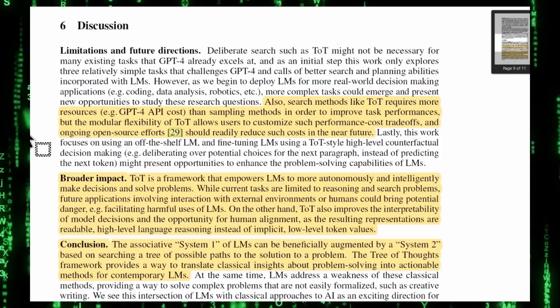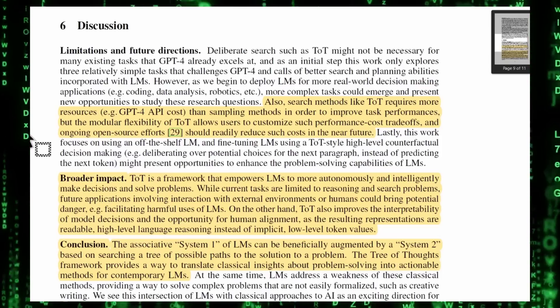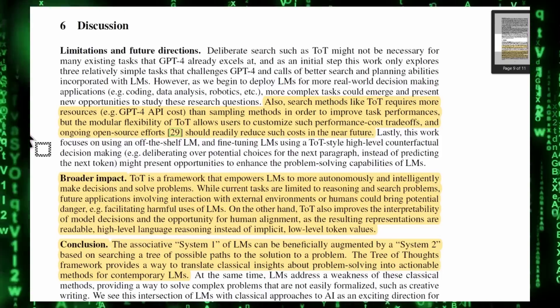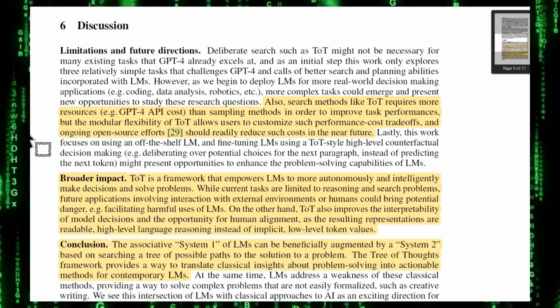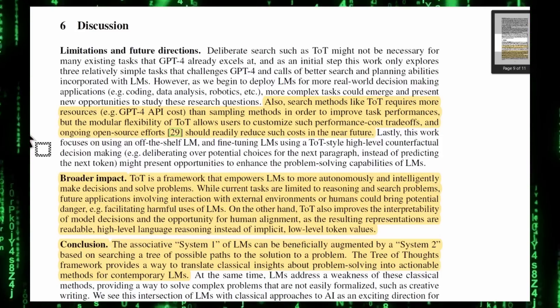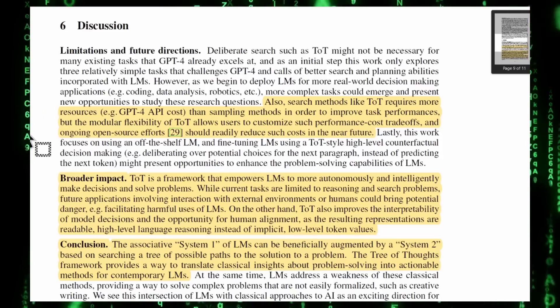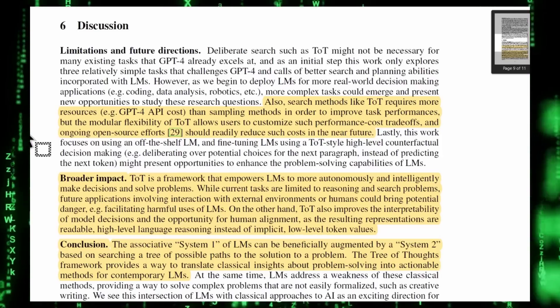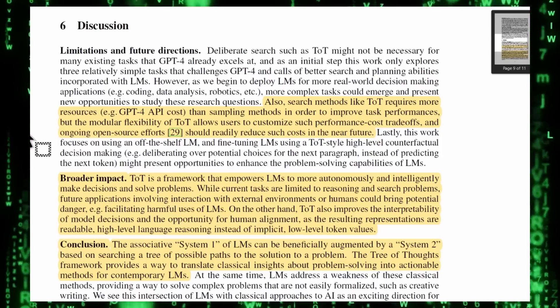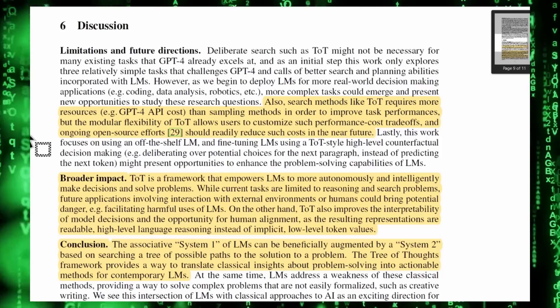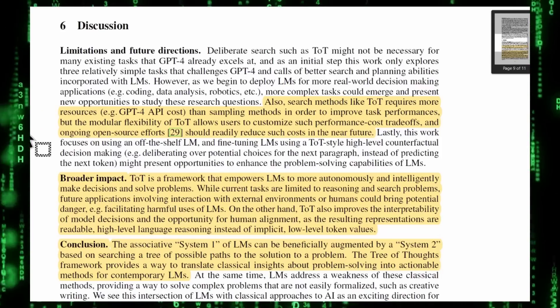The conclusion is the associative system one of LMS can be beneficially augmented by a system two based on searching a tree of possible paths to the solution to a problem. What they're saying is that GPT-4, it's strong out of the box, but this way you can increase it even further just by asking it to look down multiple paths and see which solution lies at the end of which path. The Tree of Thoughts framework provides a way to translate classical insights about problem solving into actionable methods for contemporary LMS.